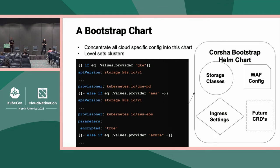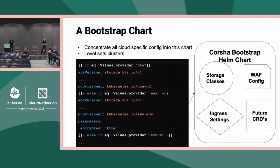There's a little config up front, but it's all committed to code — a one-time cost. Another example is our bootstrap chart, which we implement ourselves. When onboarding to a new cloud provider, there are differences like storage classes that are provider-specific and don't lend themselves to generic design. We concentrate all cloud-provider-specific configuration into this one chart. We pass in the provider as a Helm parameter and it renders differently — for example, whether to use AWS's storage provisioner or another. The bootstrap chart covers storage classes, ingress settings, load balancer differences, web application firewall config, and base CRDs.